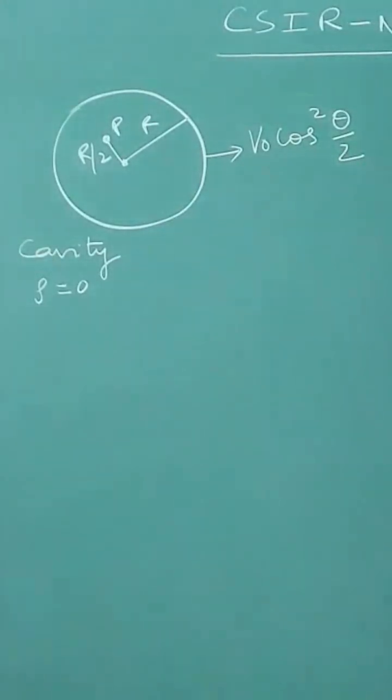So in Laplace equation, del square v is equal to 0. If we solve it for a spherical polar coordinate, I have taught you this in detail in the class, so this is equal to summation l is equal to 0 to infinity, al r to the power l plus bl upon r to the power l plus...